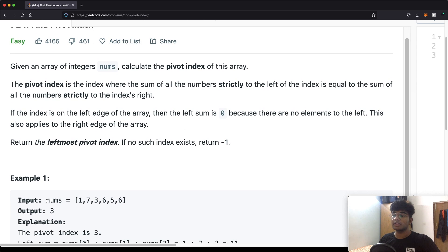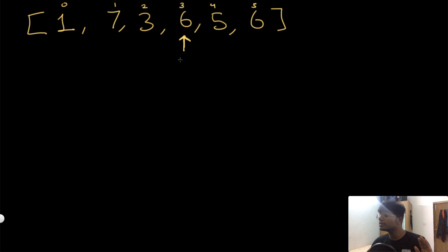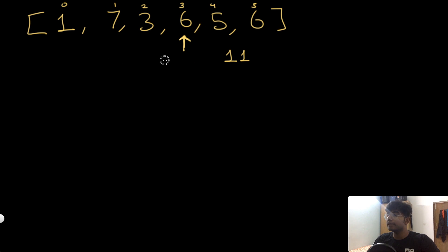Let's look at the example array [1, 7, 3, 6, 5, 6] where the answer is index three. All the elements to the left of index three are 1, 7, and 3 — their sum is seven plus three plus one which is eleven. Everything to the right are the numbers five and six, which also sum to eleven. Both sums are equal, which is why index three is the pivot index.